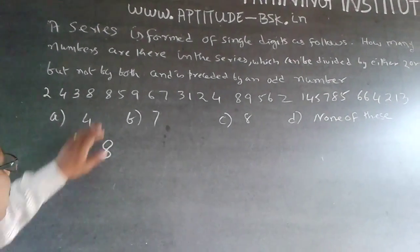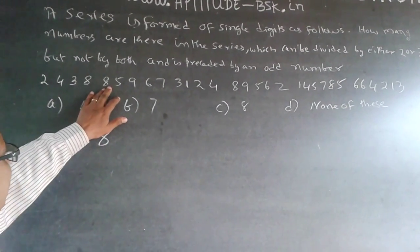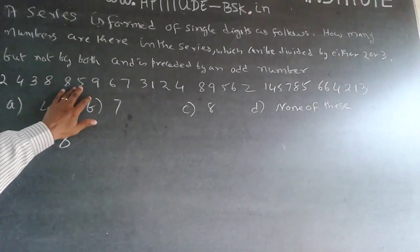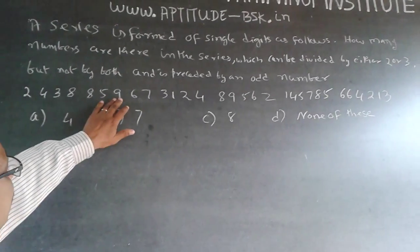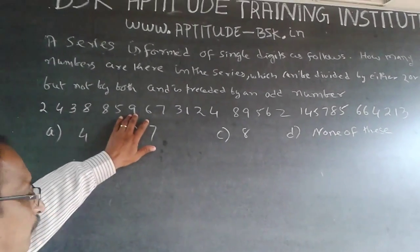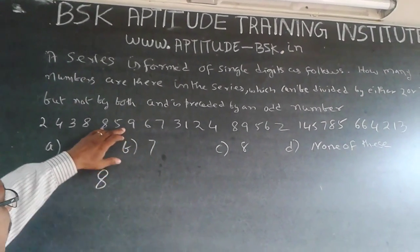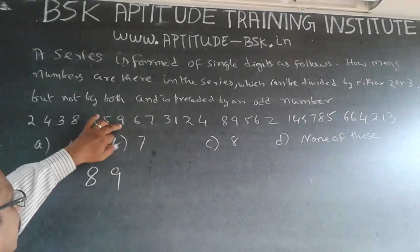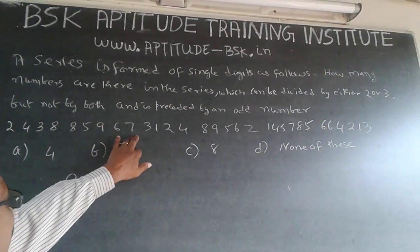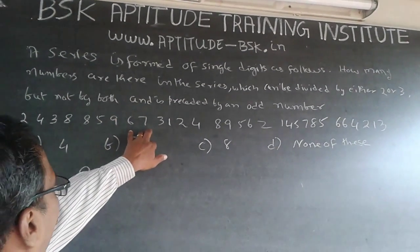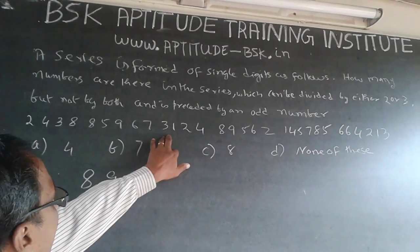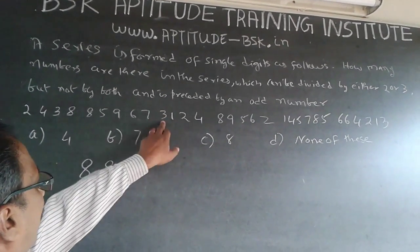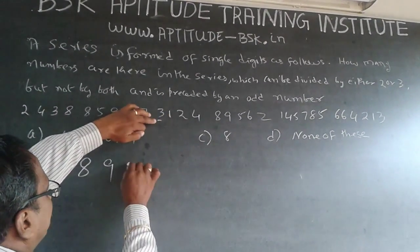The next 8 is divisible by 2 but preceded by an even number. 5 is not divisible by either 2 or 3. Then 9 is divisible by 3 and its preceding number is an odd number, so 9 is taken into account. 6 is ruled out. 7 is not divisible by either 2 or 3. 3 is divisible by 3 and the preceding number is odd, so this 3 is taken into account.